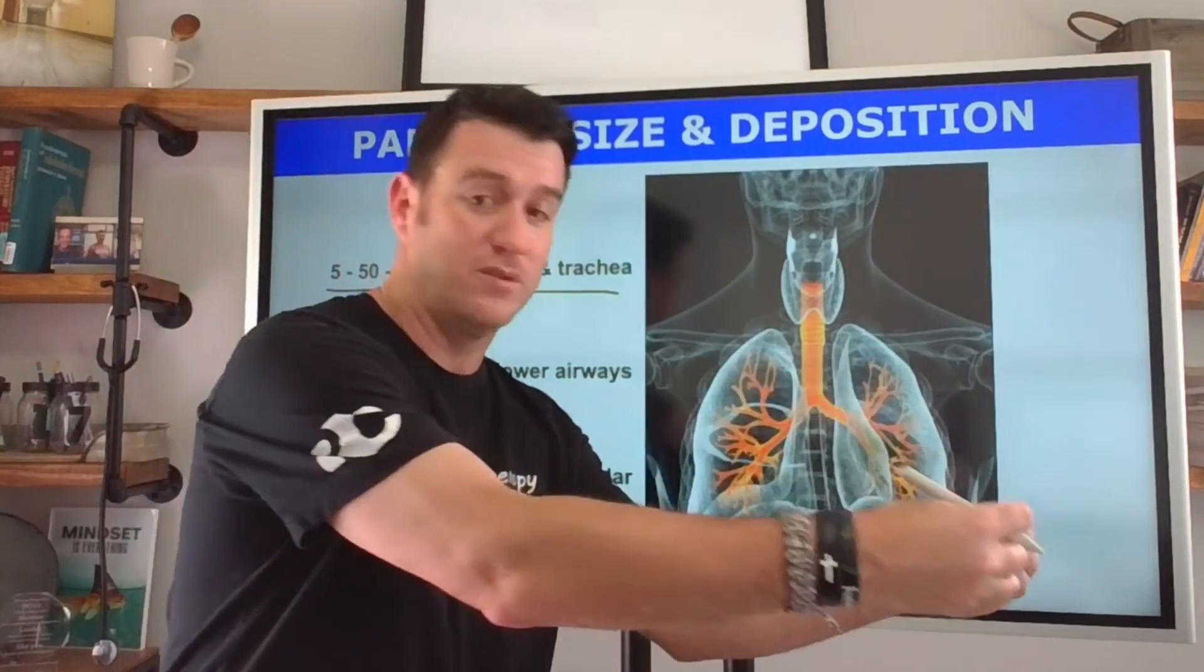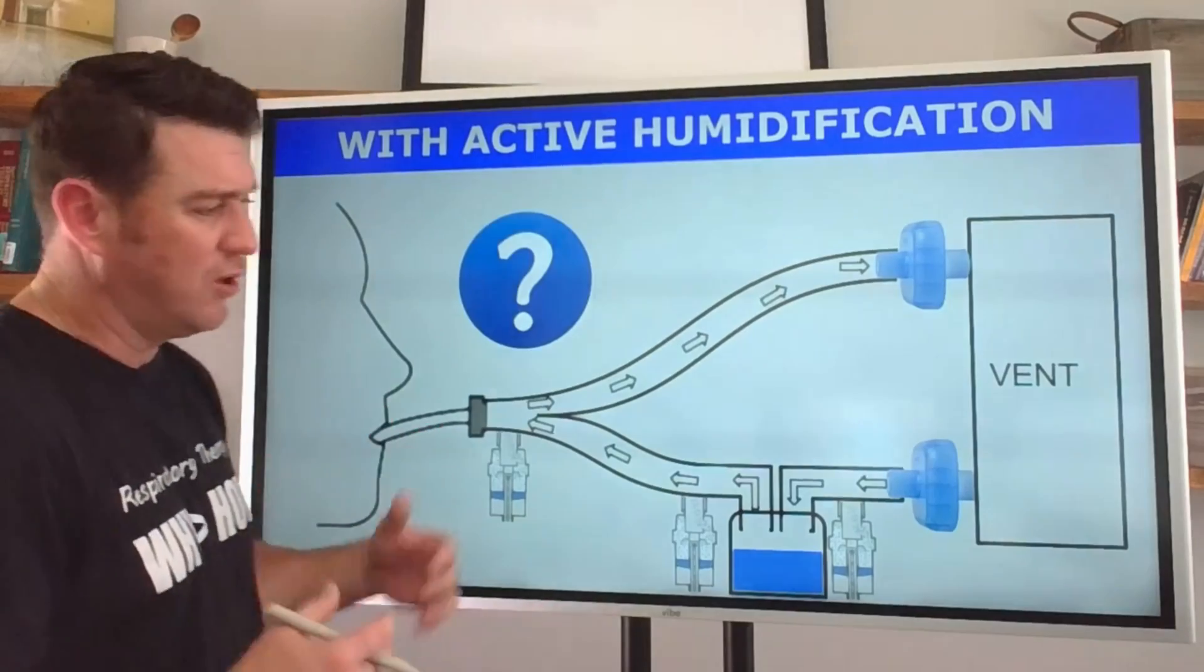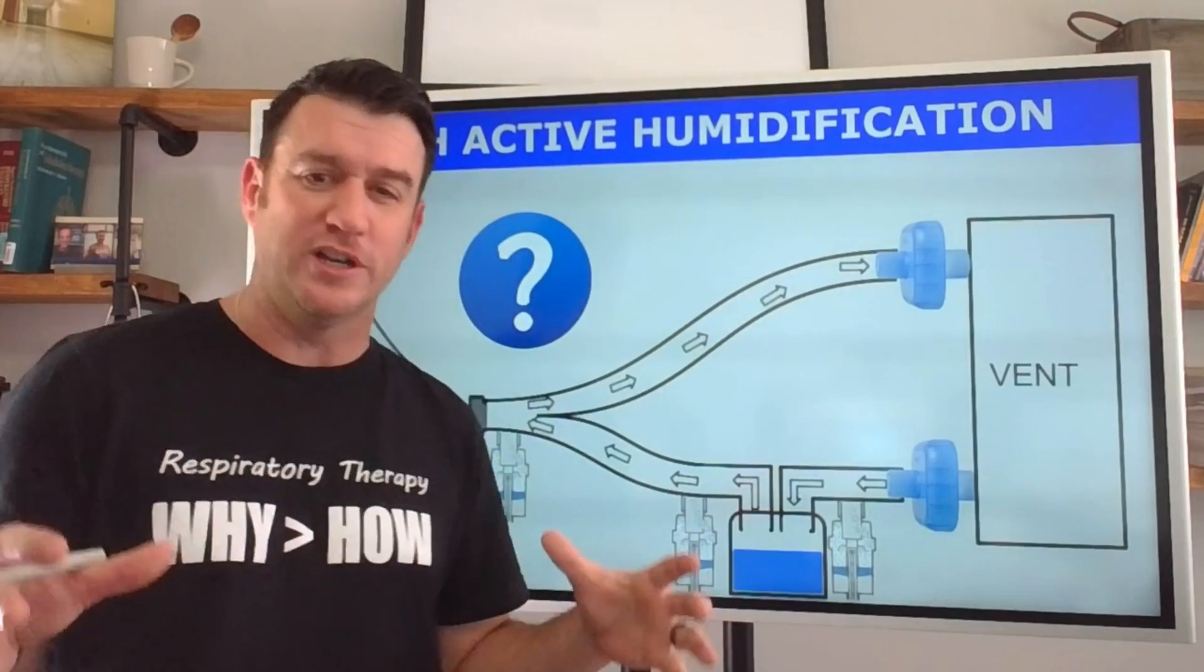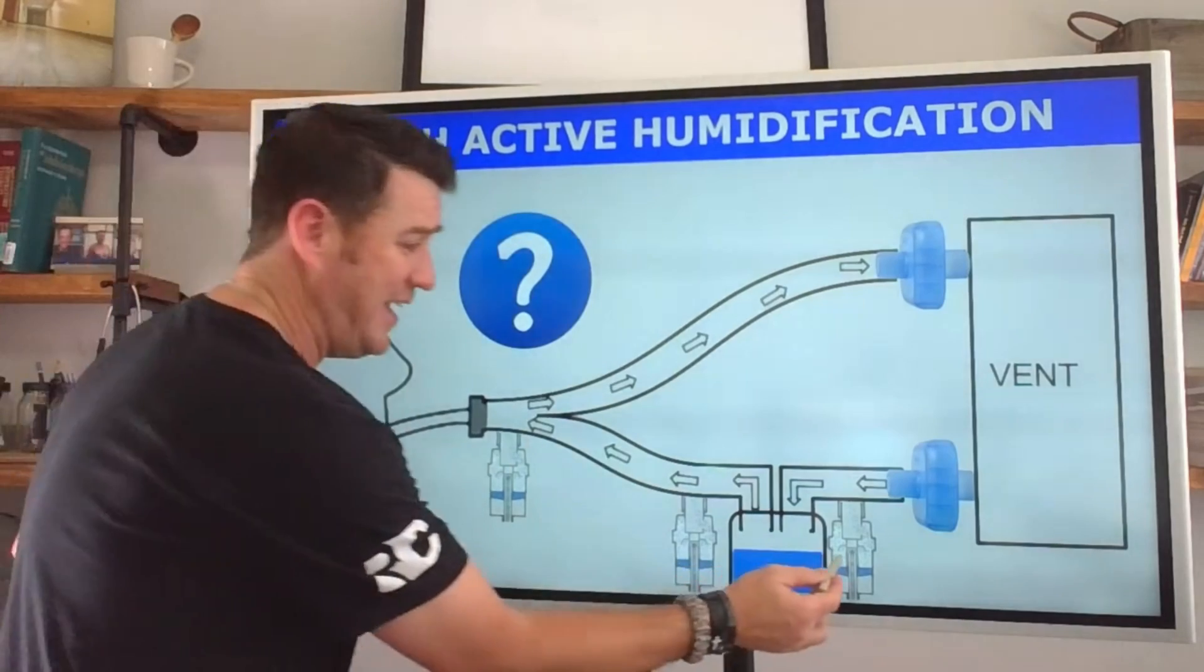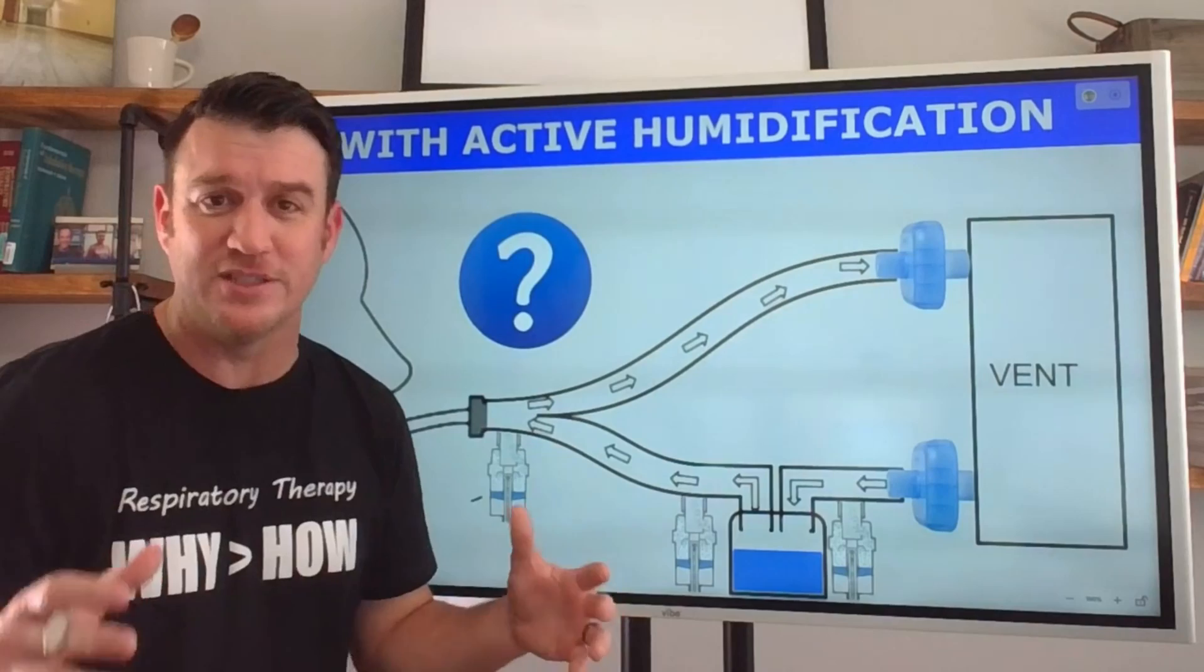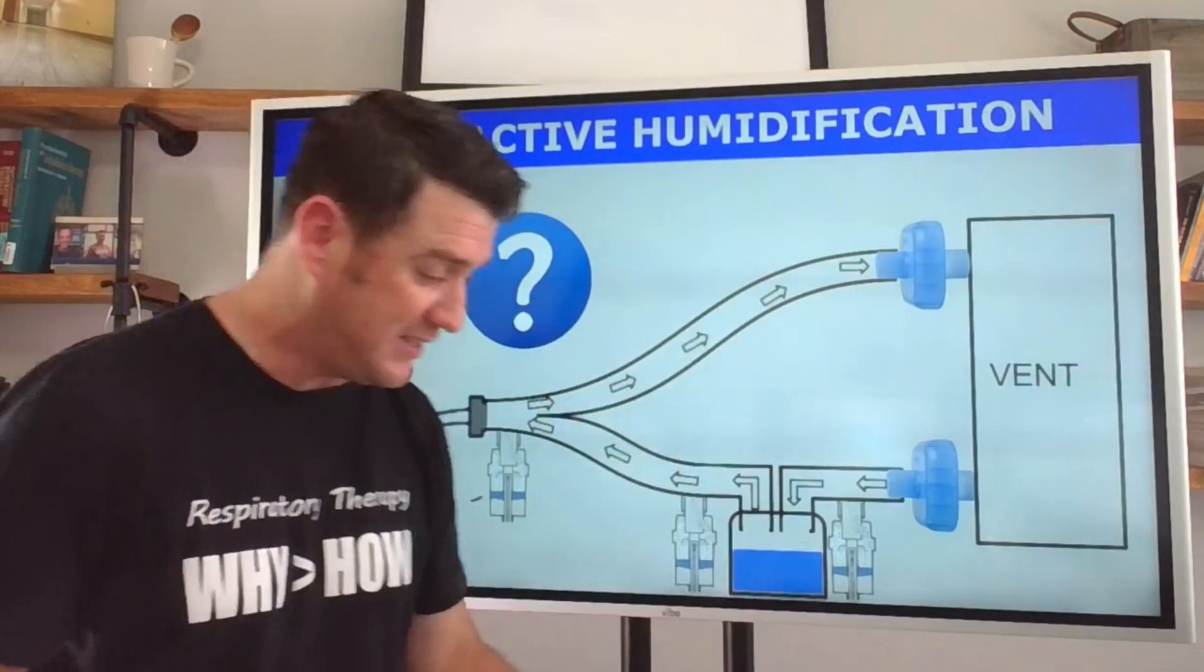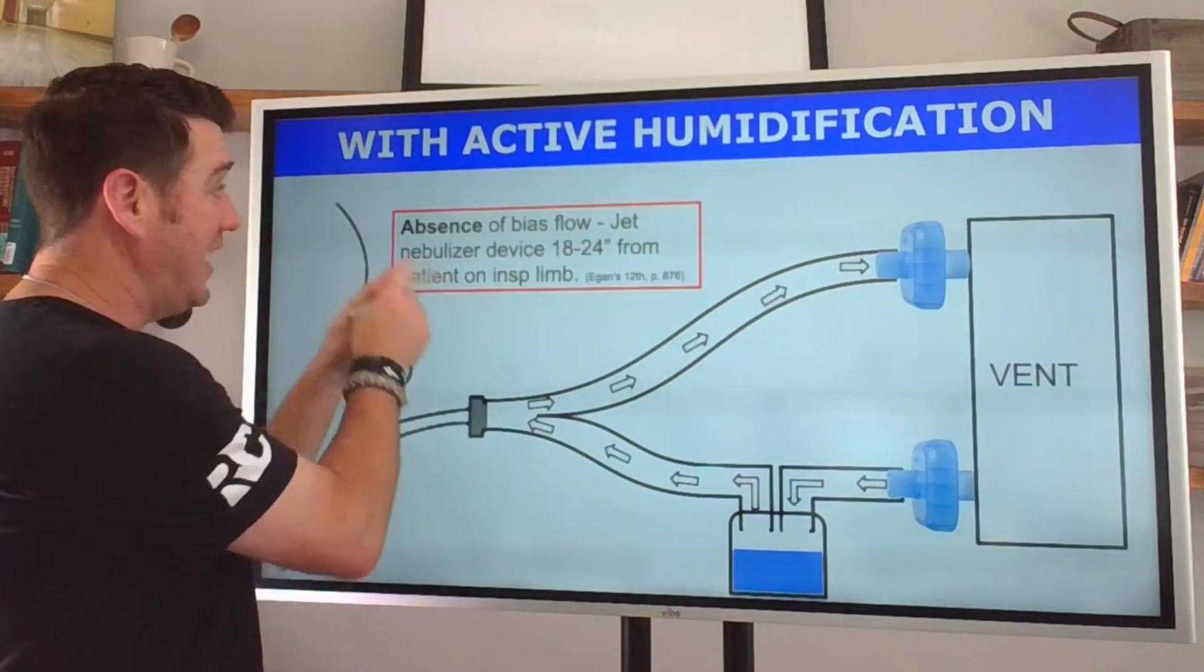We know what devices we're using, we know particle sizes, that's all good. But now I need to know where am I supposed to put this into the ventilator? Am I supposed to put it here? Am I supposed to go on this side of the humidifier, which side does it go on? Or maybe it's supposed to go up here closer to the patient? Lucky for you, Egan's page 876 is going to outline this for you very specifically and I'm going to illustrate exactly what it is saying.